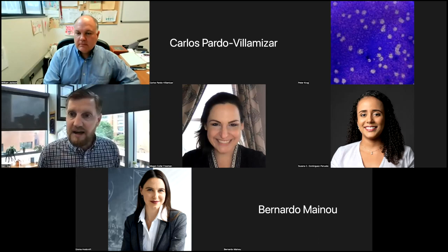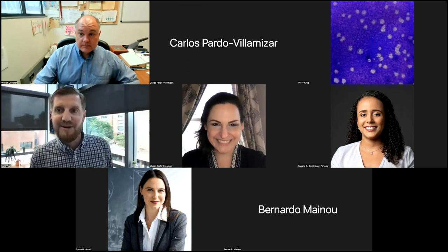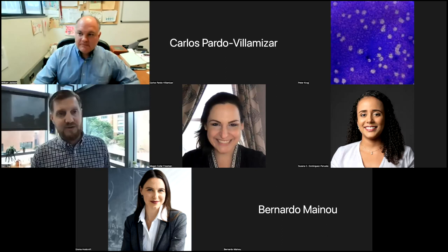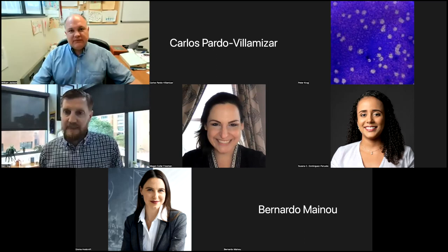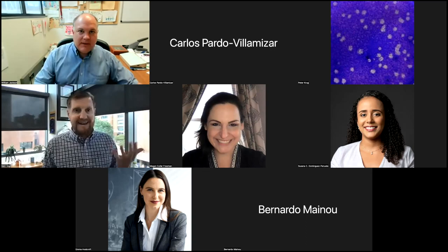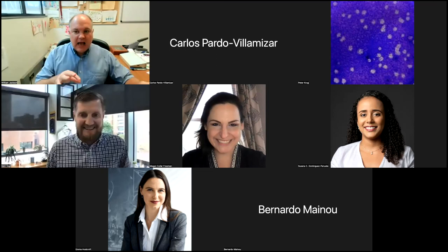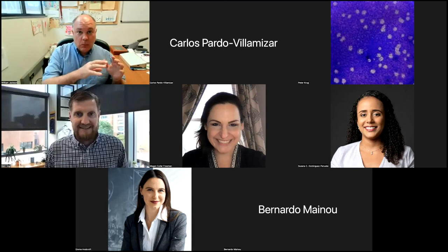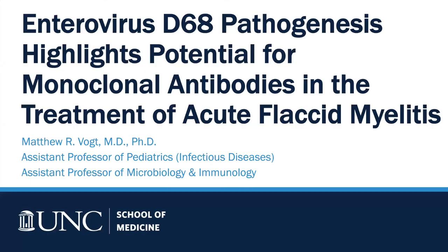Emma Hotcroft asks: is there any indication that 3C has changed over time in conjunction with the pre- and post-AFM era? That's what we're excited to find out — we don't know if modern strains are more efficient at cleaving this. I will say I'm not aware of any circumstance where one picornavirus 3C cleaves a target and another picornavirus 3C has no effect on that same target. Once someone sees 3C cleave something, generally all the 3Cs are going to cleave it — so it would be great if we were the first exception, but it's not typical.